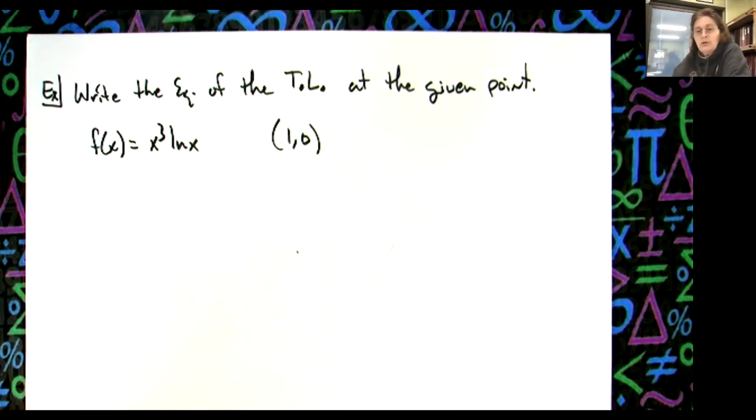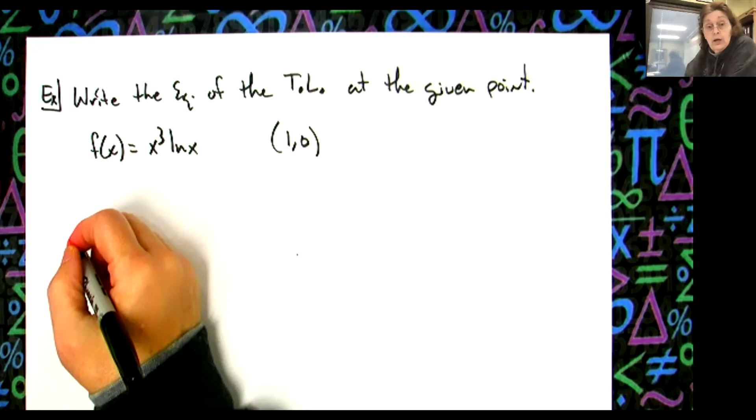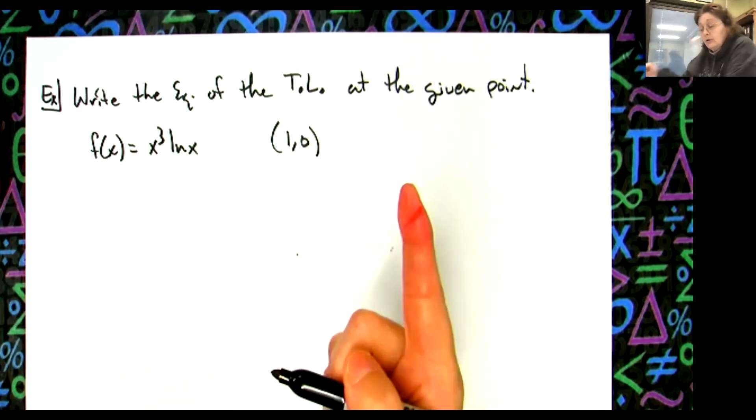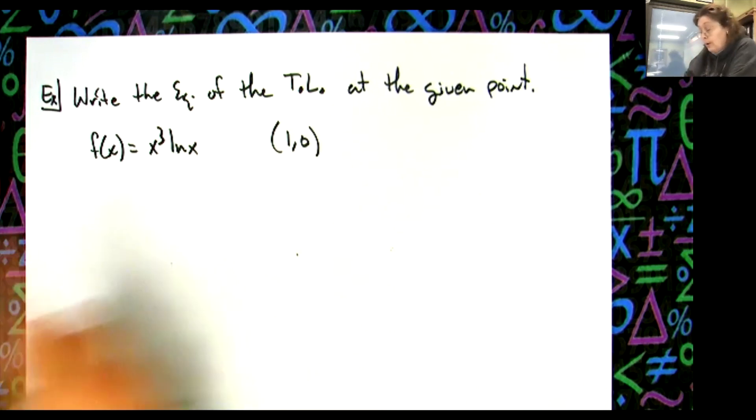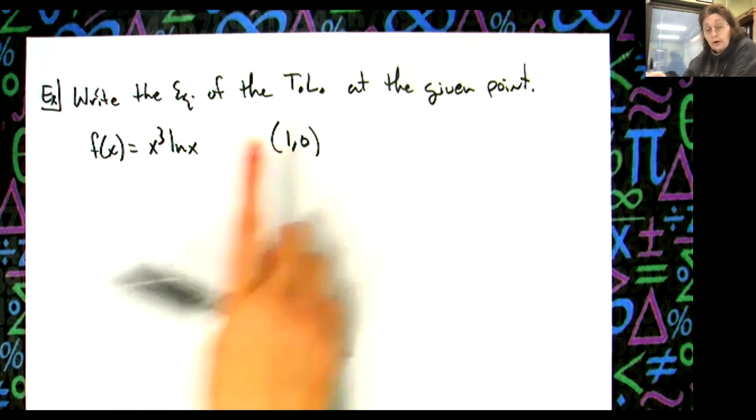So the way we do this question is going to be the way we have always done this question. Just now you've got that natural log. So what do we do? We take the derivative because we got to find the slope. If I'm going to write the equation of that tangent line, I need two things. I need the slope and I need a point on that line. So I got to find the slope.